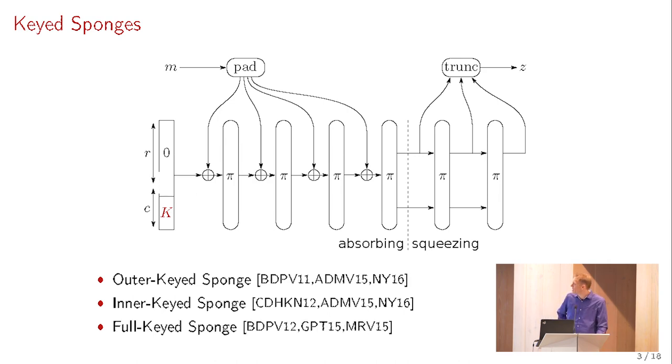There is an alternative, namely the inner keyed sponge, where the key goes into the inner part. You just initialize the state by having the key K in the inner part. It doesn't need to be C bits. What matters here is that the key size is smaller or equal than C bits. Finally, there was the full keyed sponge, because it turned out that if you have a secret state, you do not need to restrict yourself to R-bit absorption. You can have full state absorption.